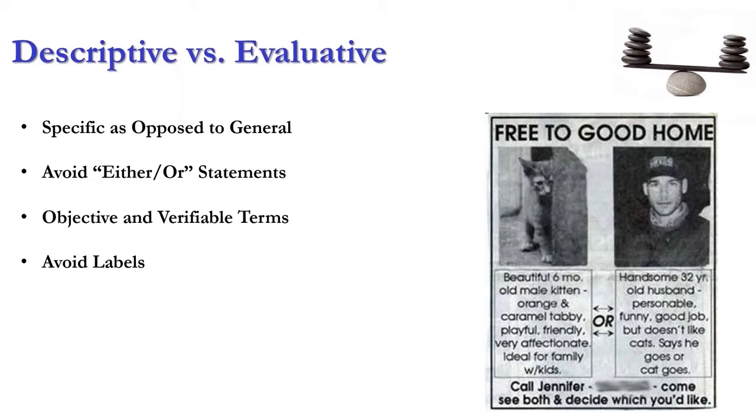We want to communicate in objective and verifiable terms. I can show them their last three reports and I can define for them the specific spelling errors. I can verify that, can't I? That is different than, 'Oh, you're just a bad writer.' And once I've given them a label, that creates unnecessary conflict.